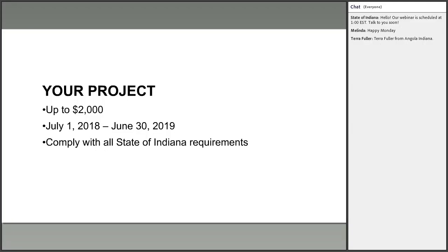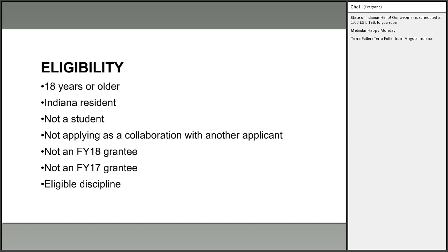Your project should have a clear beginning and end, or be a defined phase of a larger project. You can request up to $2,000 and there is no match requirement — you don't need to contribute your own money. Your proposal should be feasible to complete between July 1st, 2018 and June 30th, 2019. If you receive a grant from the IAC, you'll also be required to comply with all state of Indiana requirements for grantees, including accessibility and privacy considerations.